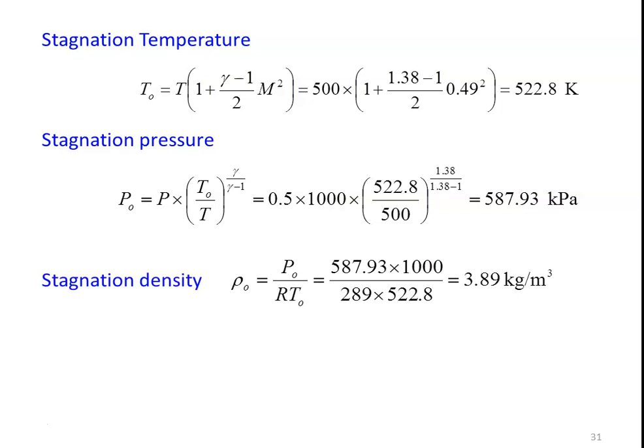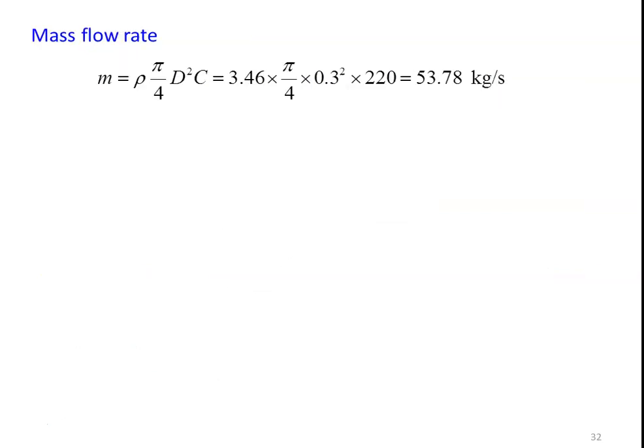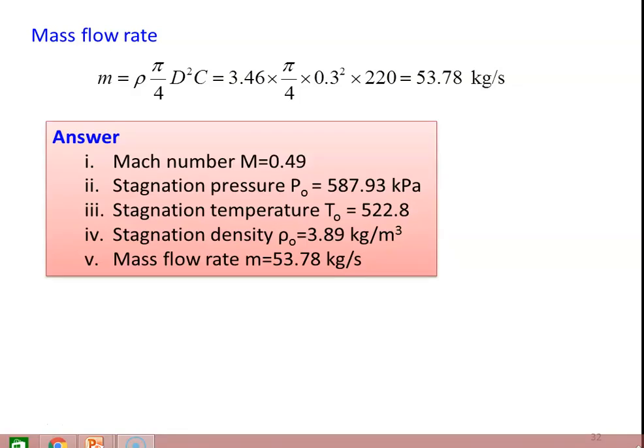Stagnation density: ρ₀ = P₀/(R × T₀) = 500 × 1000/(289 × 522.8) = 3.89 kg/m³. Static density: ρ = P/(R × T) = 500 × 1000/(289 × 500) = 3.46 kg/m³. Mass flow rate: ṁ = ρAC = ρ × (π/4) × D² × C = 3.46 × (π/4) × 0.3² × 220 = 53.78 kg/s. Answers: Mach number = 0.49, stagnation pressure = 587.93 kPa, stagnation temperature = 522.8 K, stagnation density = 3.89 kg/m³, mass flow rate = 53.78 kg/s.